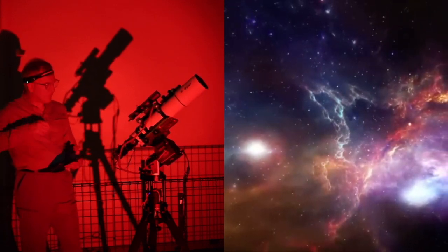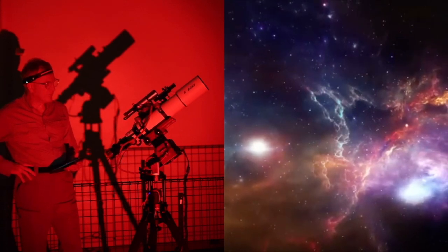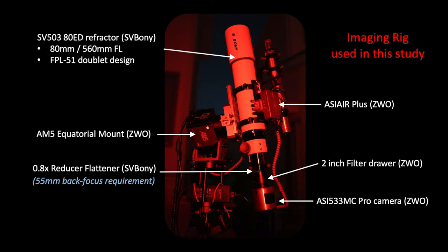To get a good magnification and view of the stars, I used my highest focal length refractor and imaging rig shown here — the Svirboni SV-503-80ED doublet refractor with a 0.8x reducer flattener that provided a focal length of about 448 millimeters. Since I do most of my imaging with that reducer flattener to reduce the F ratio from F7 to F5.6, I felt it was good to include it in this analysis.